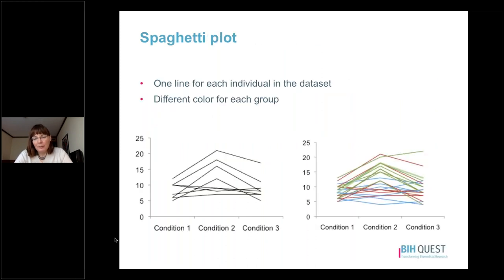Another option for showing individual level data on a line graph is what's called the spaghetti plot. In a spaghetti plot you simply make one line for each individual in the data set, and if you have multiple groups you might use a different color for each group. In the first example, all participants are in the same group shown in all black across three conditions, and in the second example we have three different groups — one in red, one in green, and one in blue.